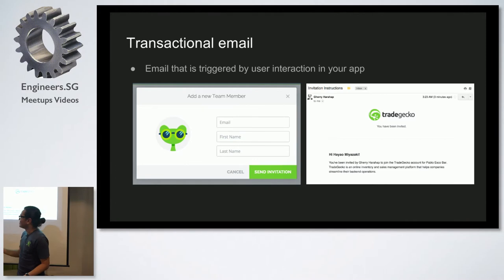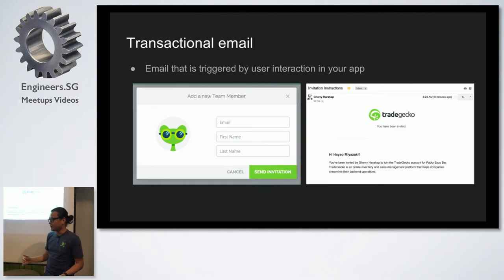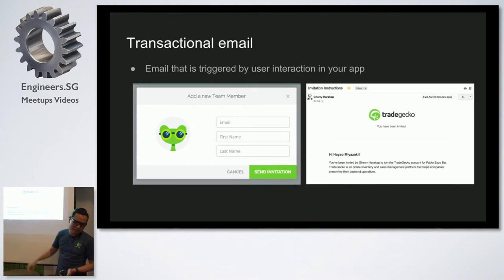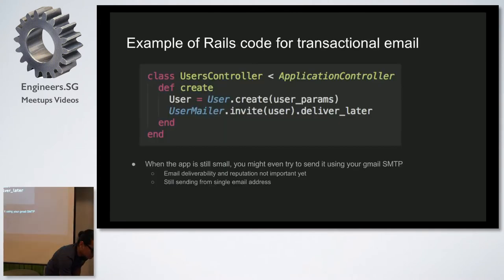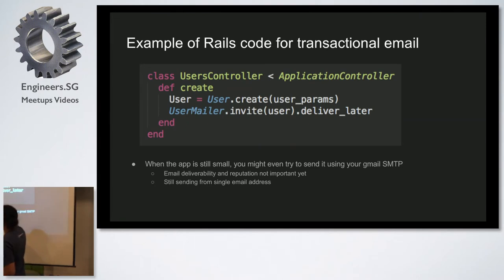What are not transactional emails? Things like marketing emails, or if you're sending a summary of your sales every month — those are not transactional emails. A transaction is something the user triggers through interaction in your app. In a Rails app, there's usually a users controller, and when you create a new user you send a user mailer. You've likely seen this in your Rails app as well.